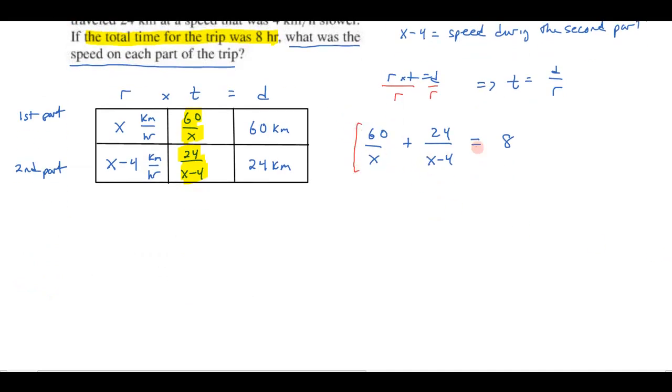Let's go ahead and multiply both sides by the common denominator, which would be x times x minus 4. And so over on the left hand side here, I'll have to distribute that to each of the terms. And when I distribute that to the first term, you see that this x is going to cancel this x, and I'll just get the x minus 4 times 60.